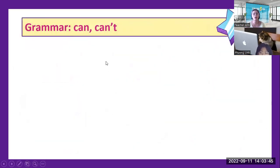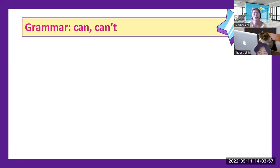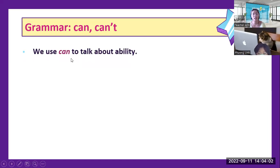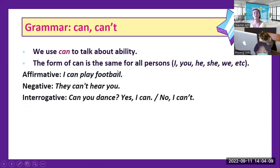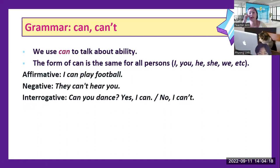We have here the words can and can't. When you say can, that's positive Lynn. When you say can't, it means negative. We use can and can't to talk about ability. The form of can and can't is the same for all persons — I, you, he, she, we. There is no singular or plural distinction for can and can't.